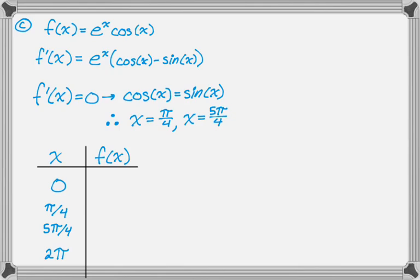If you plug in 0 to the original function, you get e to the 0 cosine of 0, which is just 1. If you plug in pi over 4, you get e to the pi over 4, and then the cosine of pi over 4 is radical 2 over 2.